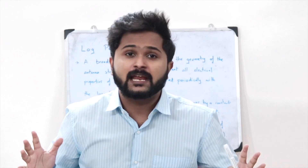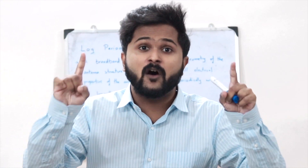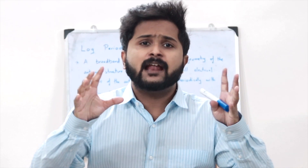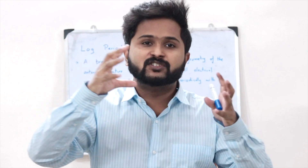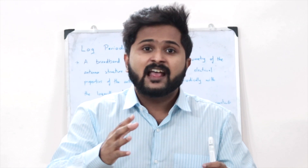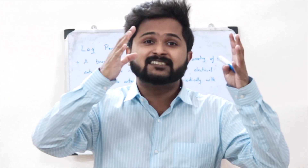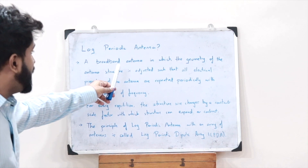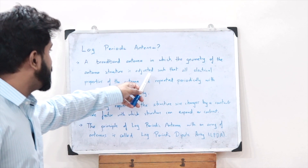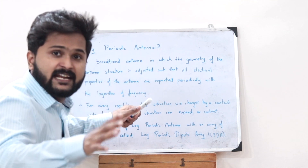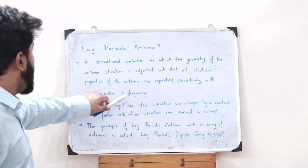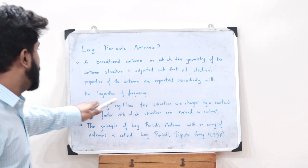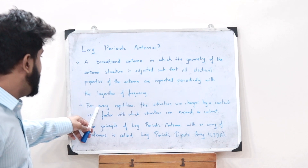A log periodic antenna is an antenna in which the structure or geometry of the antenna is varied such that the electrical properties are repeated as a function of the logarithm of the frequency. It is a broadband antenna where the geometry is adjusted so that all electrical properties — be it the radiation pattern or the impedance — are repeated periodically with the logarithm of the frequency.